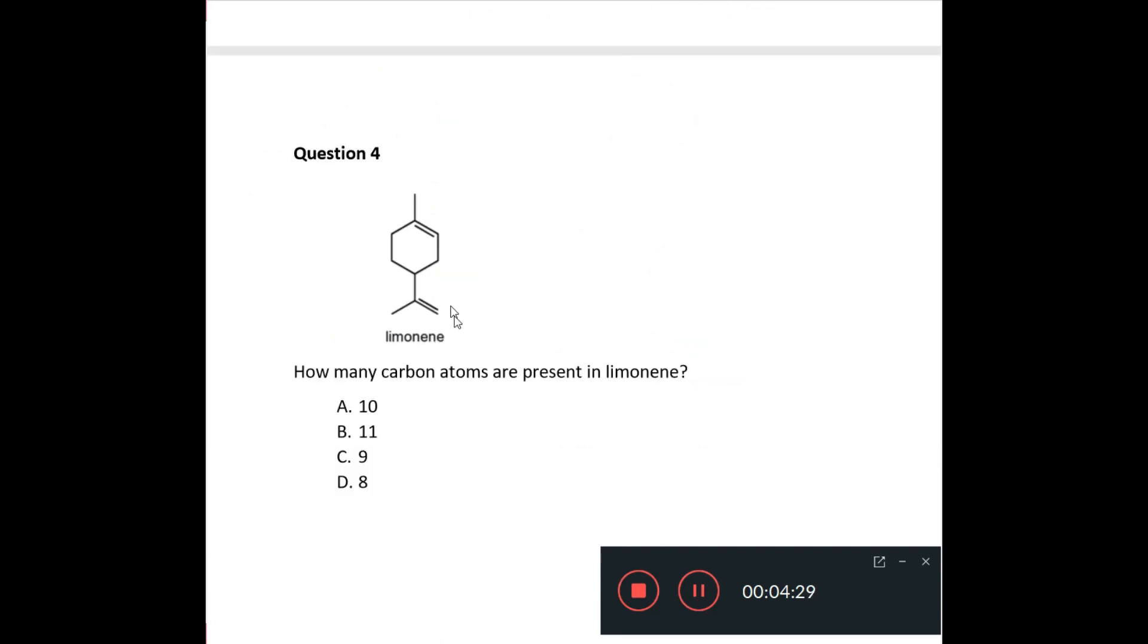Question 4 asks, how many carbon atoms are present in limonene? And limonene is drawn. The skeletal structure is given here. So in the skeletal structure, you can put in the number of carbon atoms. So there's one there, there's one there, there, there. This is a six-membered ring. Plus one, seven, eight, nine, ten. So there are ten carbon atoms in limonene. Your answer is 10A.